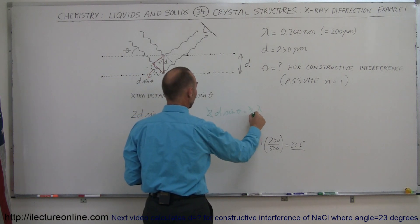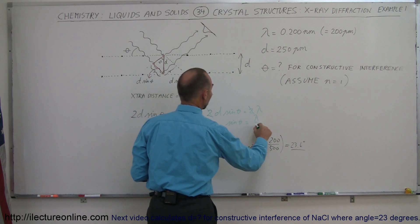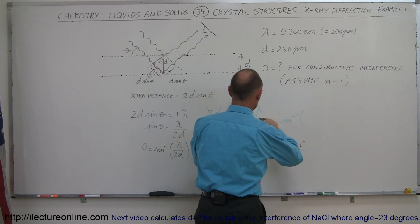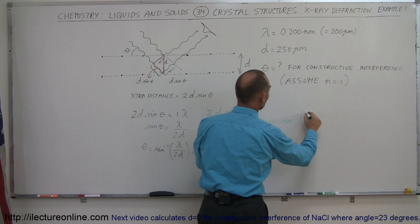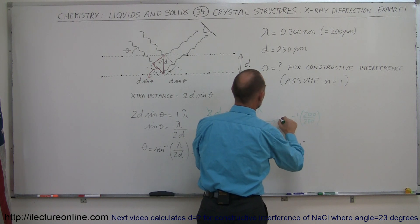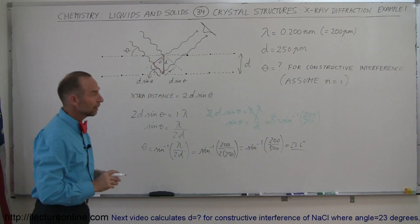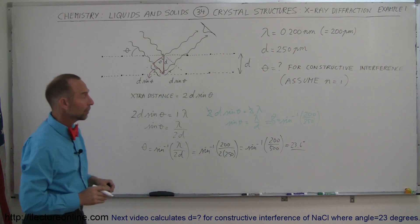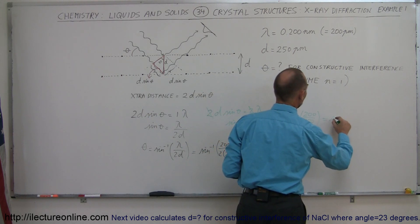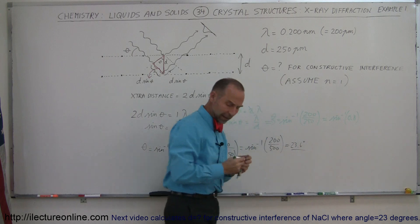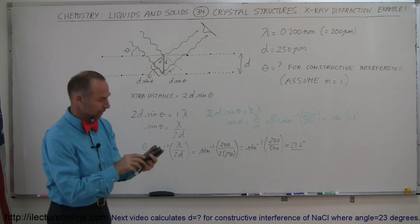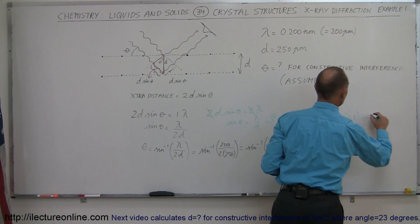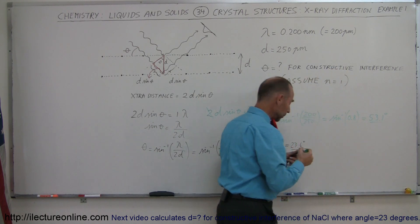The twos cancel out, and so we have sine of theta equals lambda divided by D. Taking the arc sine: theta equals arc sine of lambda over D, which is arc sine of 200 picometers over 250 picometers — the arc sine of 0.8. Calculating that gives us 53.1 degrees, so we can angle the X-ray beam at 53.1 degrees and again see a constructive interference pattern on the detector.